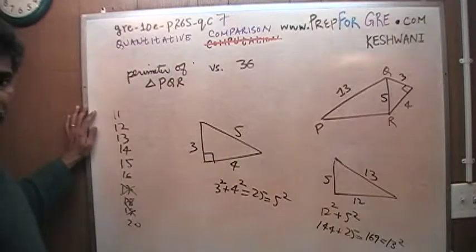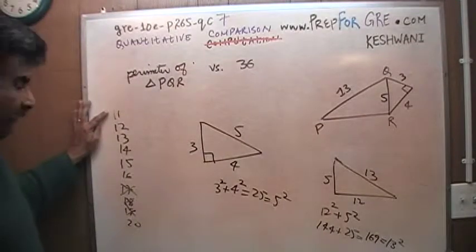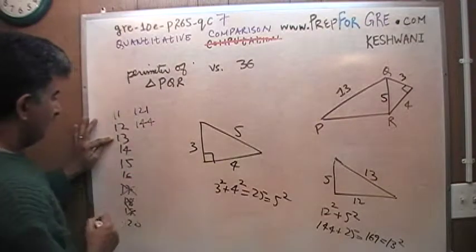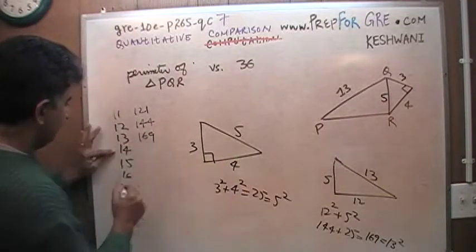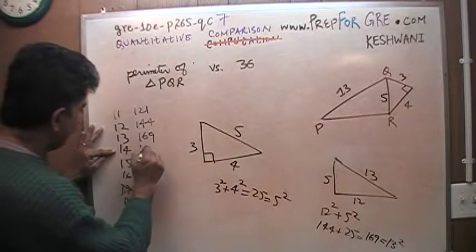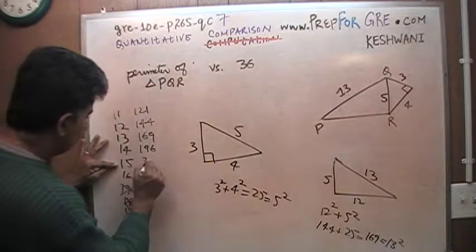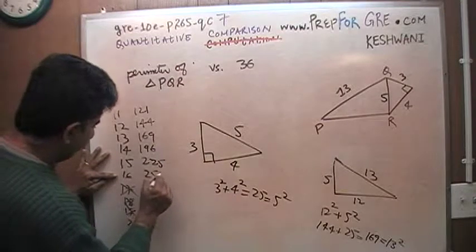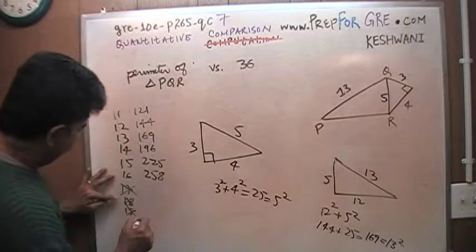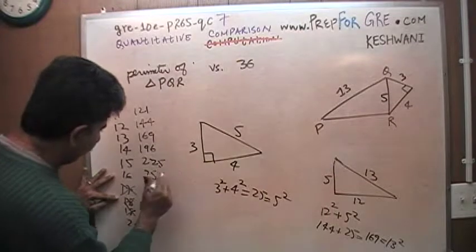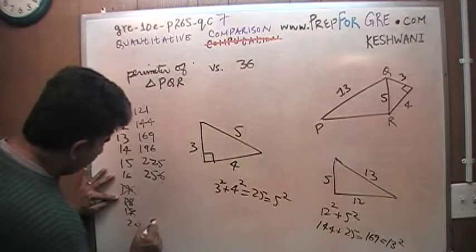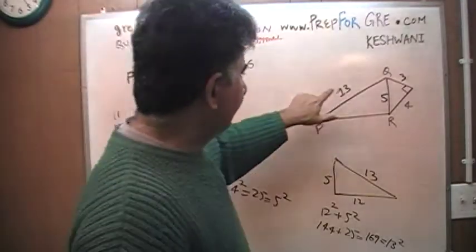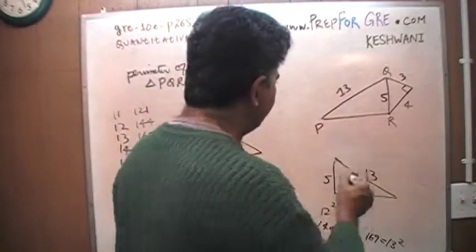And if you don't know, learn them: 11 squared is 121, 12 squared is 144, 13 squared is 169, 14 squared is 196, 15 squared is 225, 16 is 256, and then 400. You should know by heart. So again, since this is 13 and this is 5, the missing side has to be 12.